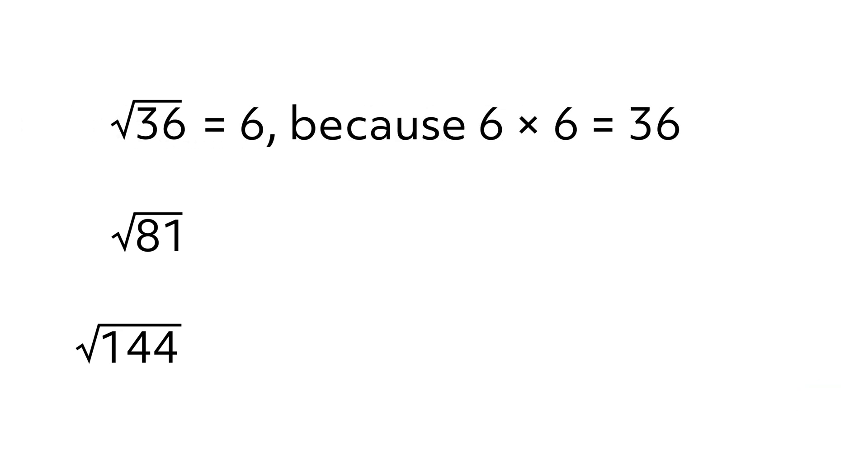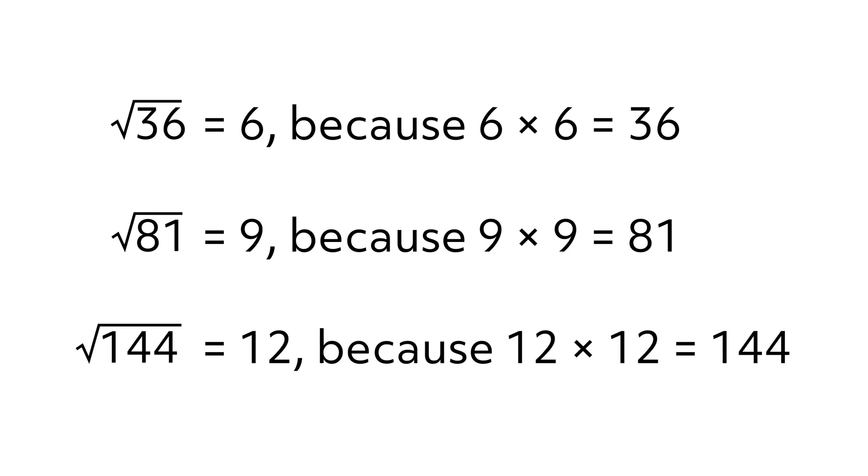The square root of 36 is 6 because 6 times 6 equals 36. The square root of 81 is 9 because 9 times 9 equals 81. And the square root of 144 is 12 because 12 times 12 equals 144. We get these nice pretty numbers because we are taking the square roots of perfect squares.